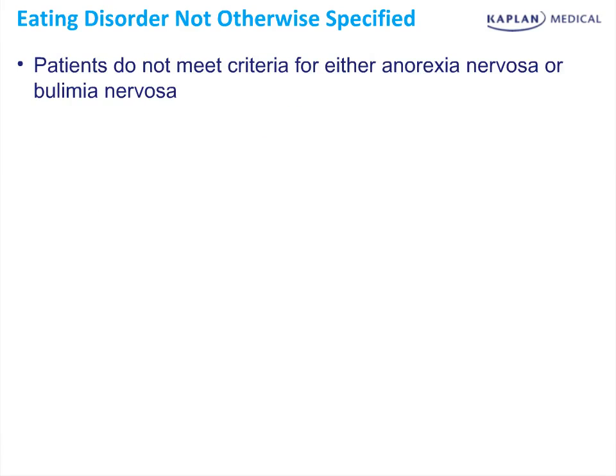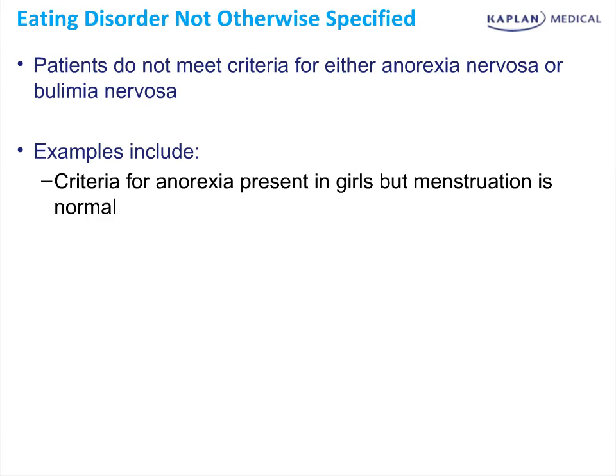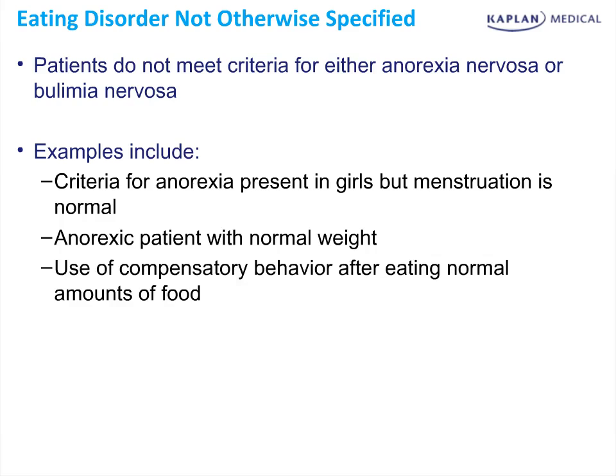Eating disorder not otherwise specified (NOS) is a wastebasket diagnosis for patients who don't meet full criteria for anorexia or bulimia. Examples include: anorexia criteria present in girls but with normal menstruation; an anorexic patient with normal body weight; or compensatory behavior after eating normal amounts of food — not binge eating, just regular eating with compensatory activity. It has elements of different disorders but doesn't meet full criteria for any one of them.